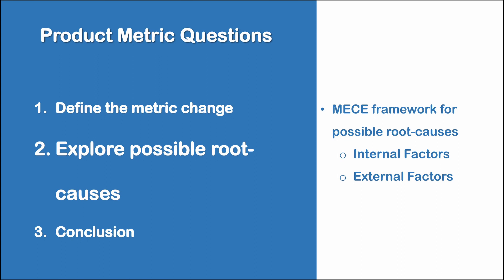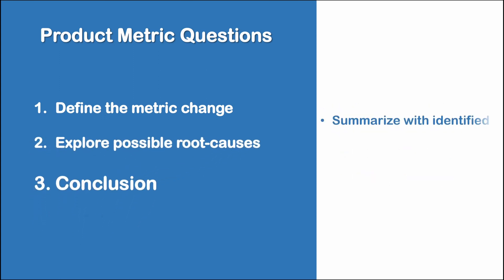Once you have created your framework, you need to brainstorm ideas and possible causes within each area identified. The interviewer will most likely stop you to talk about some of the proposed root causes, which is perfectly normal. Listen carefully to what they say, as they will often provide clues pointing you in the right direction. At the end of step two, you will most probably have your answer. Step three is conclusion — you should conclude by summarizing your findings, and if time permits, explore plausible solutions for the problem identified.